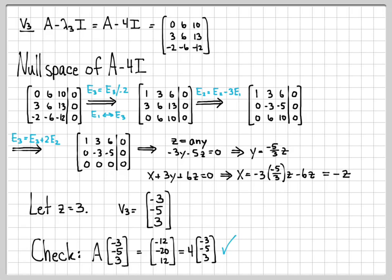That concludes our example of how to compute eigenvalues and eigenvectors of a matrix. Eigenvalues are always roots of the characteristic equation, and eigenvectors are always solutions of the null space of A minus lambda times I.